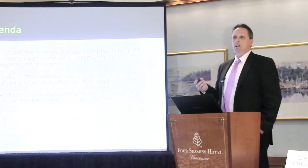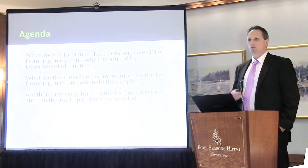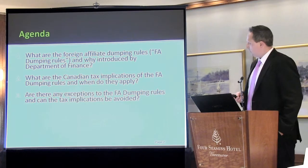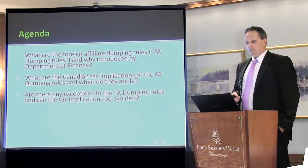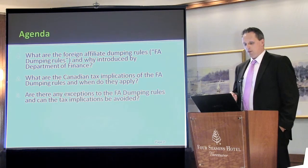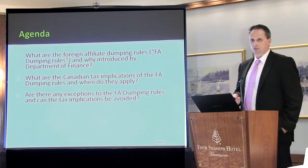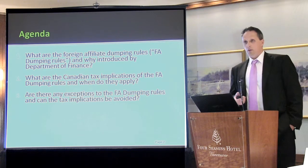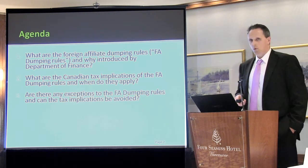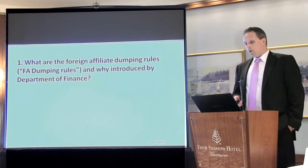The last topic we're going to cover today is foreign affiliate dumping rules. As Brad mentioned briefly, it's essentially the reverse direction of investments for a foreign affiliate — so instead of an upstream loan, it's effectively a downstream investment in shares or a loan. This came out in the March 2012 budget. The key questions are: what are the rules and why were they introduced, what are the tax implications in Canada and when do they apply, and are there any exceptions?